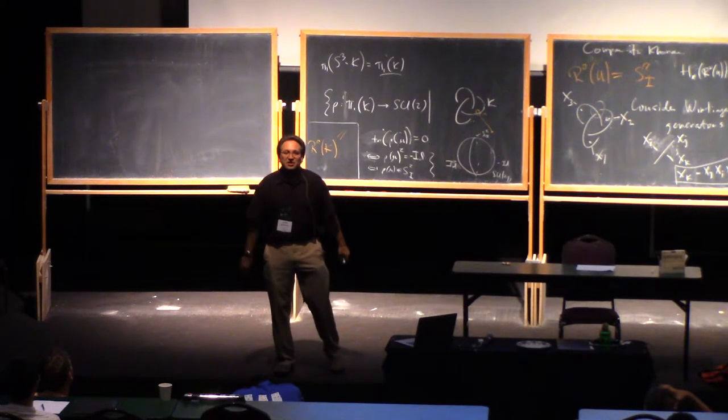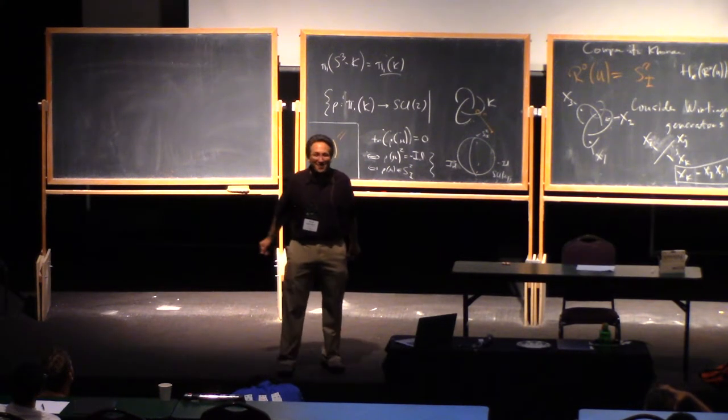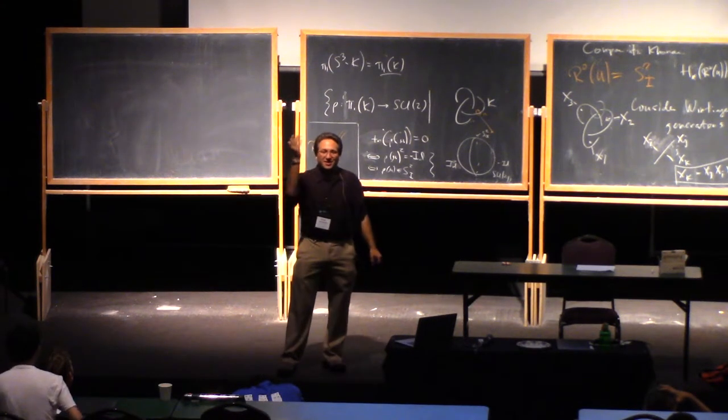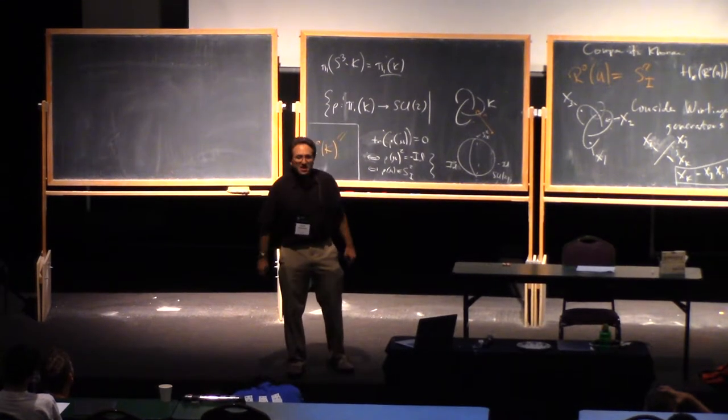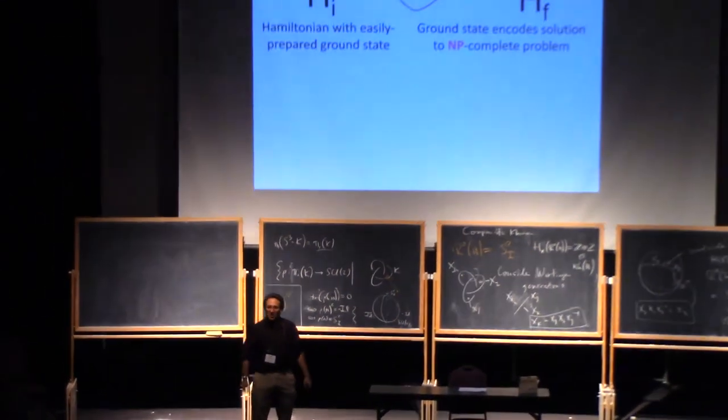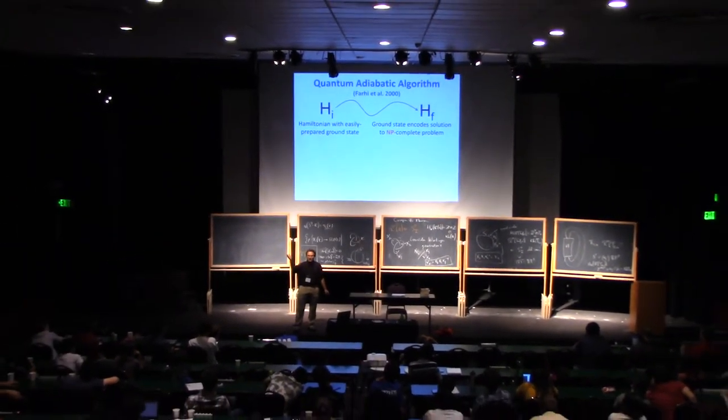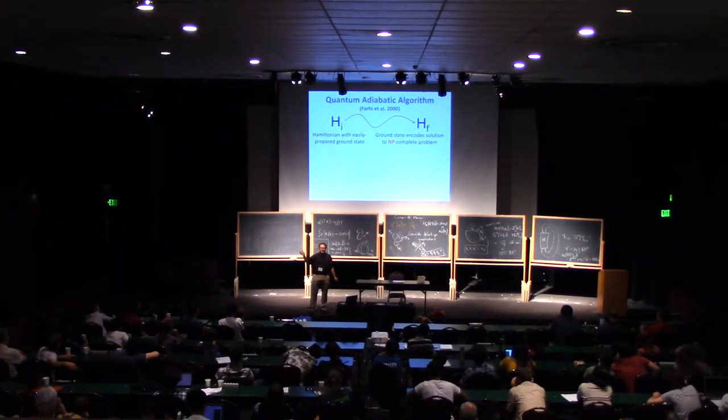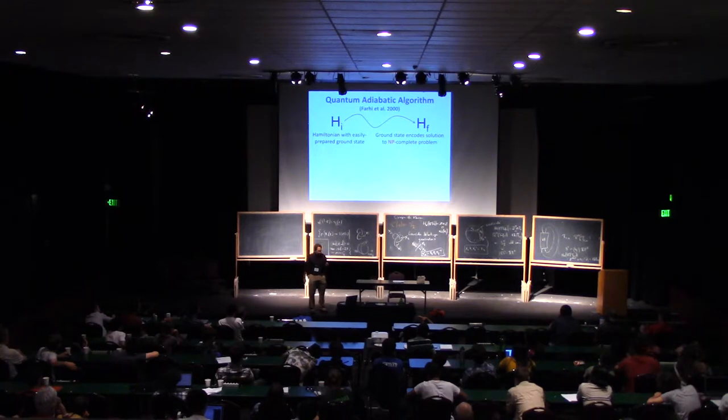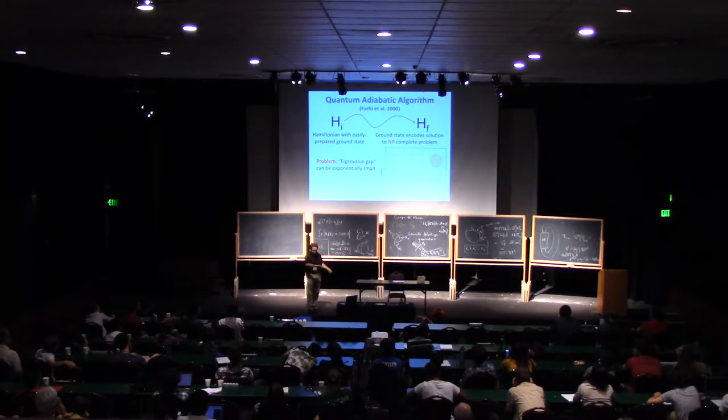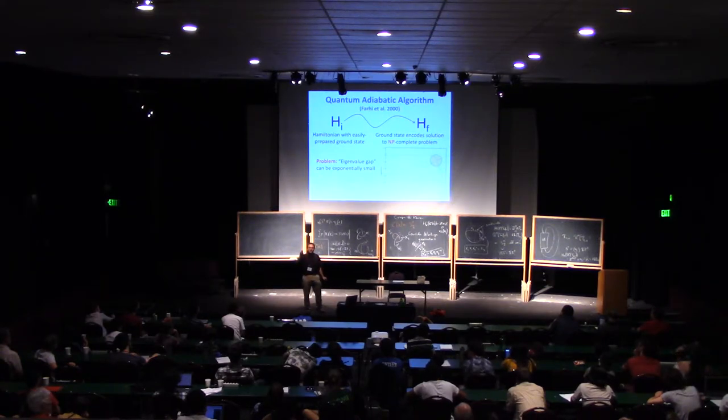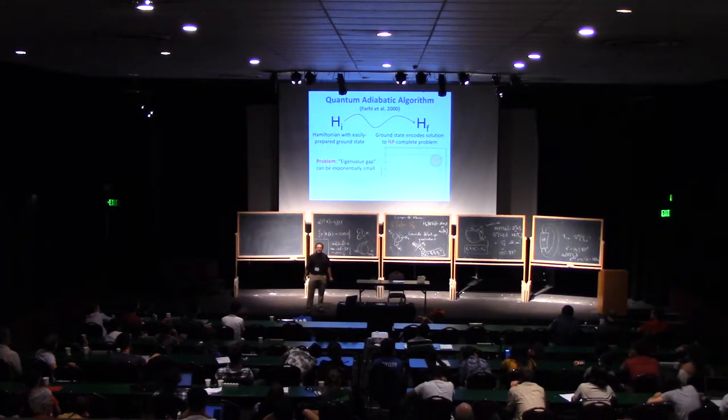There's this adiabatic theorem which says that as long as you transition slowly enough from HI to HF, you must end up in the ground state of HF, therefore solving your NP-complete problem. From this point of view, the only question is how slowly do you have to change the Hamiltonian? And there were early hopes that this was just going to solve NP. But it all depended on what was called the minimum spectral gap between the Hamiltonians, which is a type of quantity that also arises in QFT. As you vary the Hamiltonian, you look at the gap between the smallest and the second smallest eigenvalues, and however small that is, you need to use the inverse of that amount of time, or like the squared inverse of that much time.